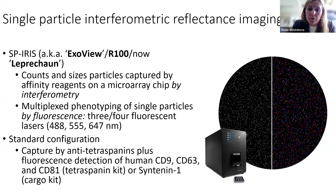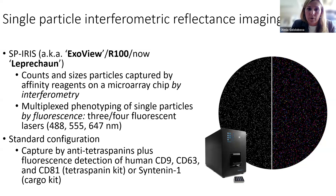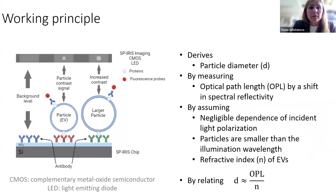For mouse samples, we have a slightly different configuration — we capture by CD9 and CD81 only, with two negative control spots: hamster IgG and rabbit IgG. In addition to sizing particles by interferometry, we can also do phenotyping. Based on which particular spot a particle is captured on, we can identify which tetraspanins are more abundant compared to others. We can also label captured particles with fluorescent antibodies — up to three or four fluorescent antibodies on the same chip depending on which version of the instrument you have.